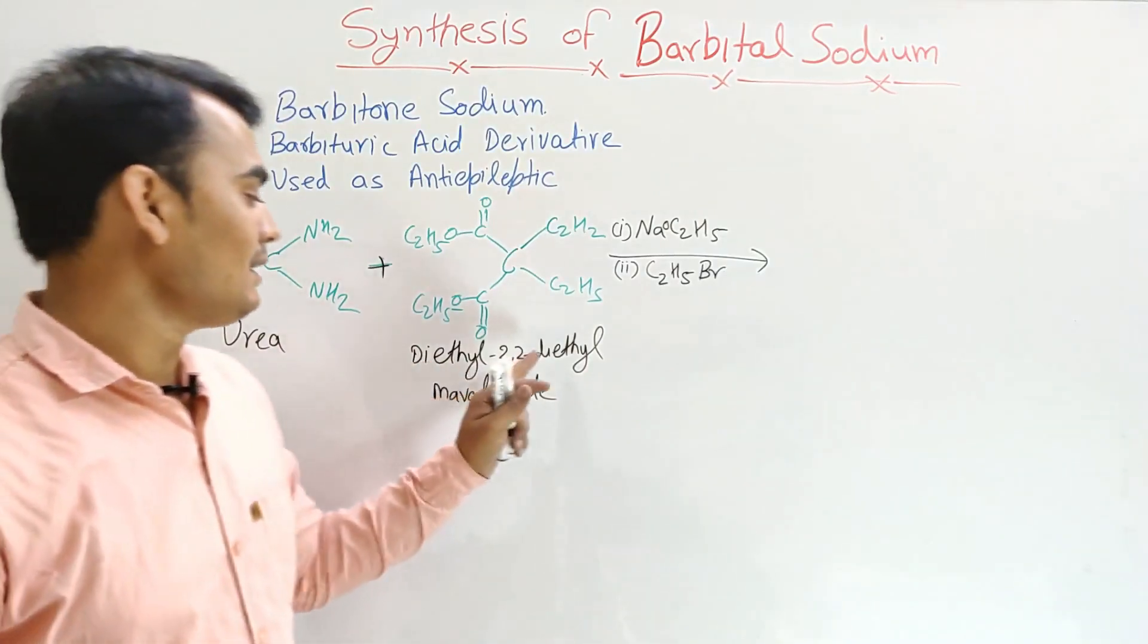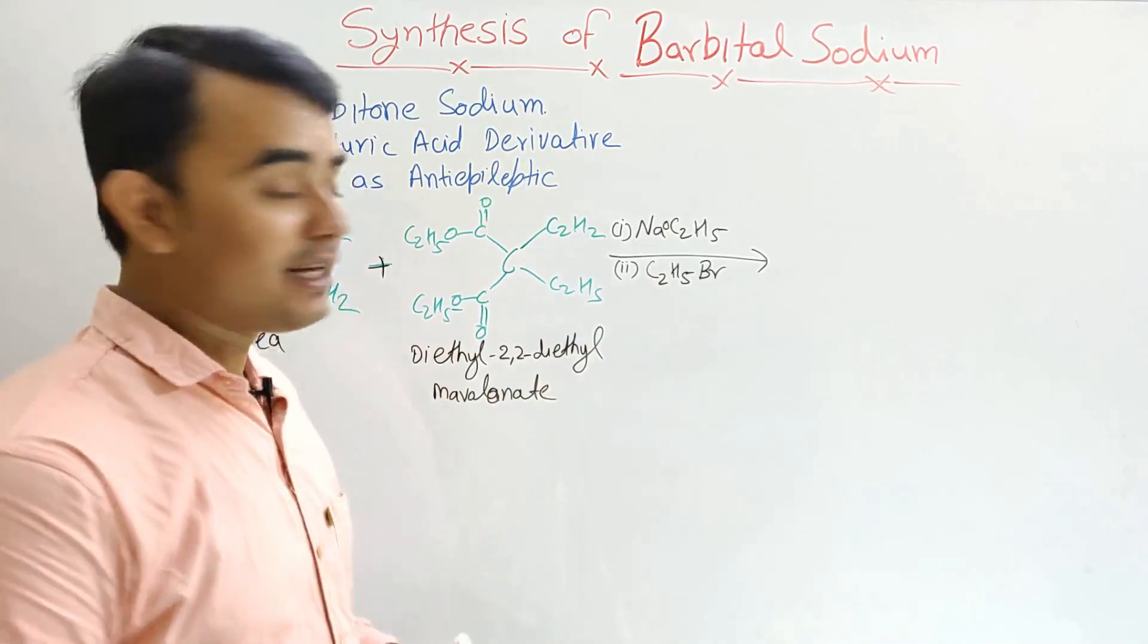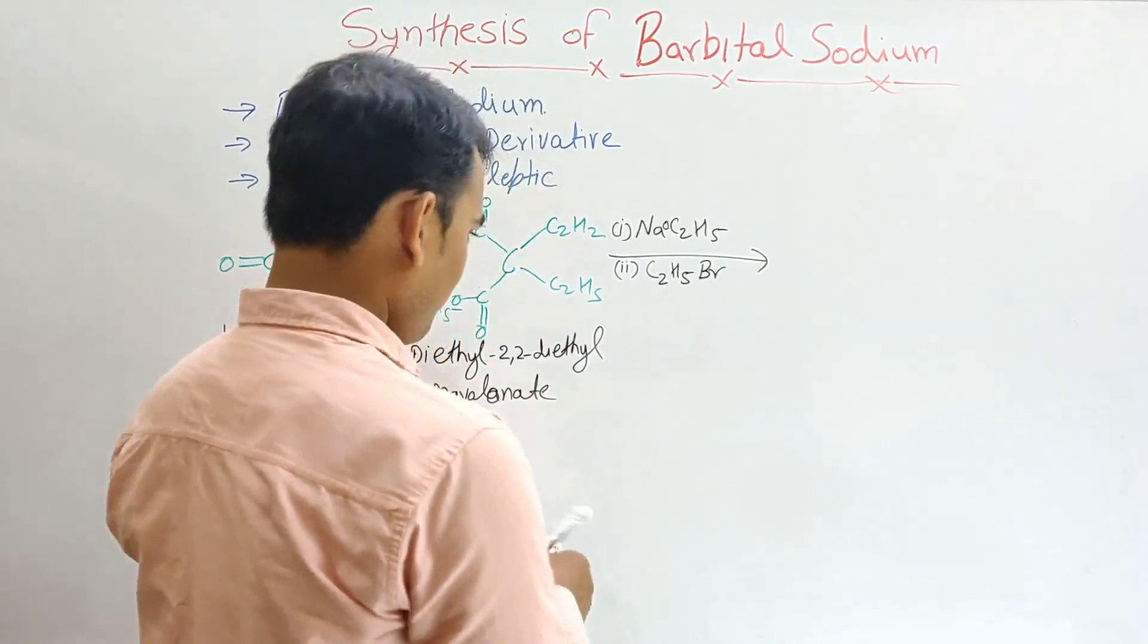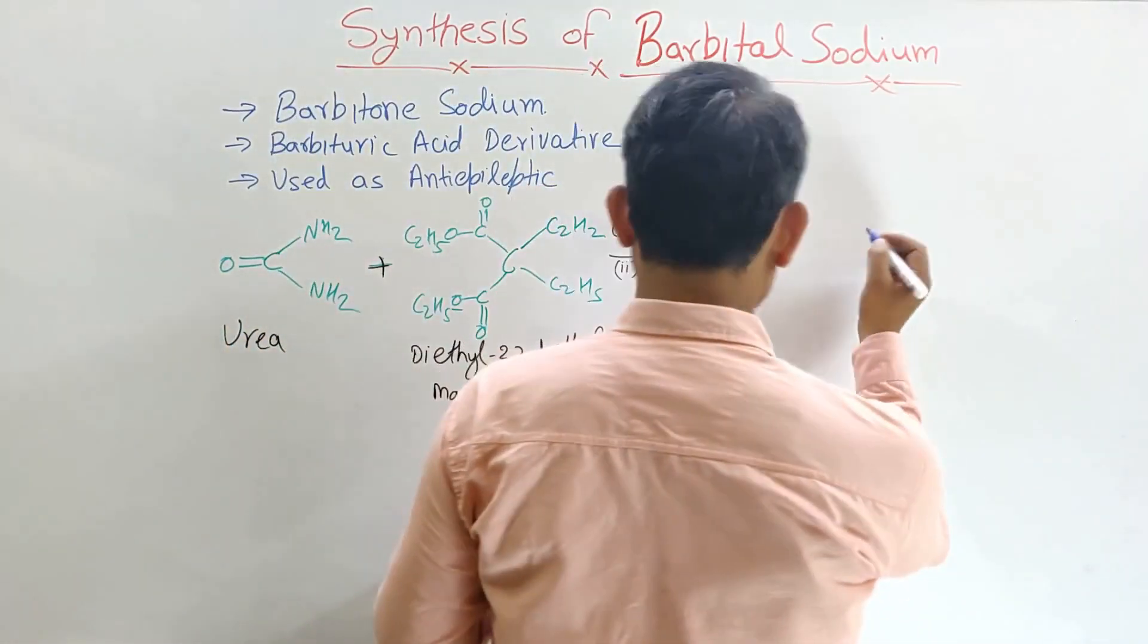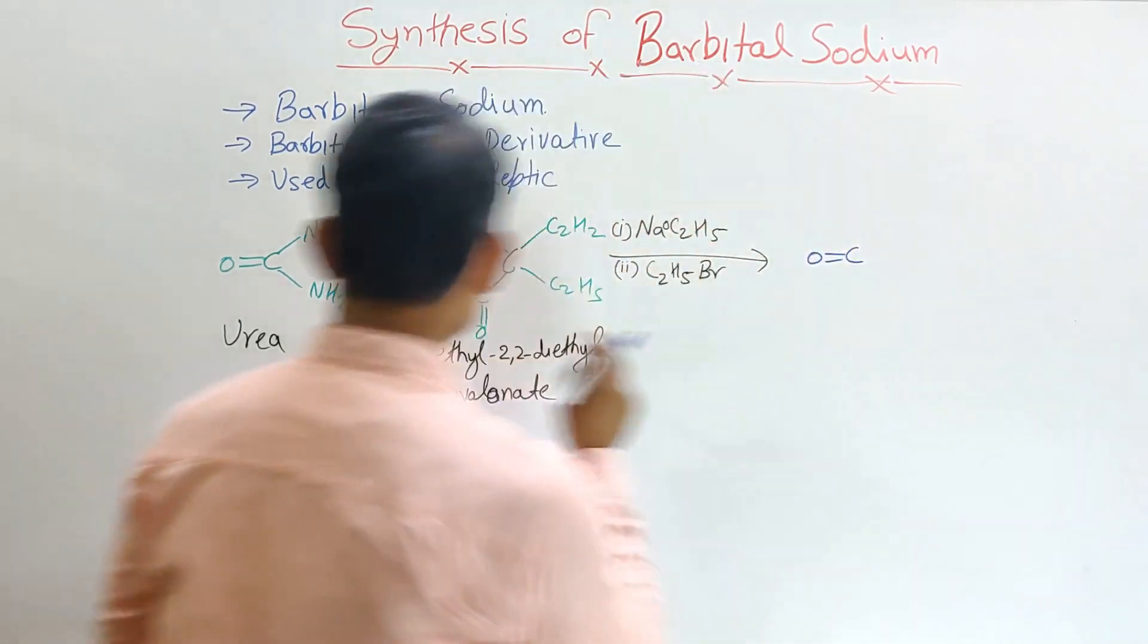So when urea and diethyl 2,2-diethyl malonate reacted in the presence of sodium ethoxide and ethyl bromide, then it is formed the barbital or barbitone. And it becomes like this.